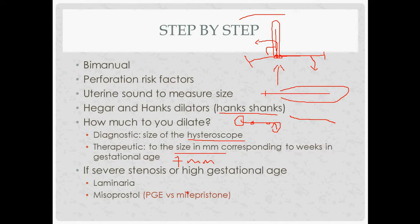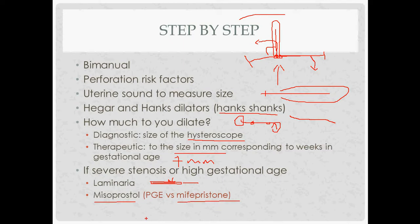For severe stenosis or high gestational age, consider methods beyond mechanical dilation with Hager or Hanks. One option is laminaria — made of kelp, a small stick placed in the cervix that absorbs water, expands, and slowly dilates the cervix over hours. You could also use misoprostol, a prostaglandin, commonly used as a cervical ripening agent — given vaginally with IV oxytocin to induce labor, and also used as an abortifacient, sometimes combined with mifepristone. Misoprostol is a prostaglandin; mifepristone is a progesterone receptor antagonist.